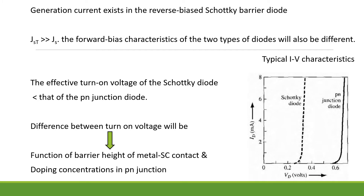However, the generation current is negligibly small compared to the JST value of the Schottky diode. We can see that JST of the Schottky diode is much greater than JST of the P-N junction diode. The forward bias characteristics of the two types of diodes will also be different.